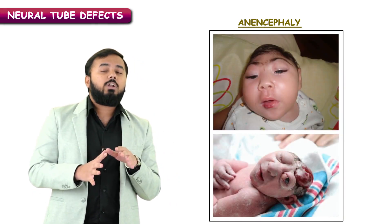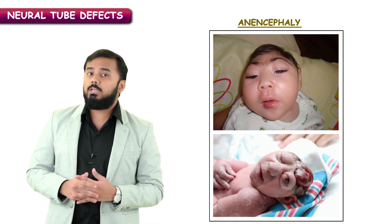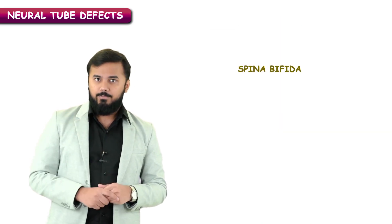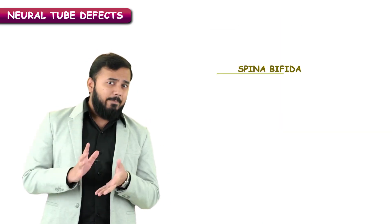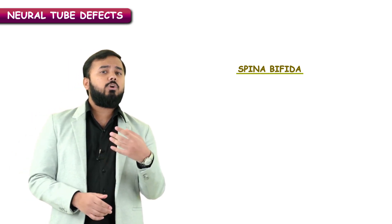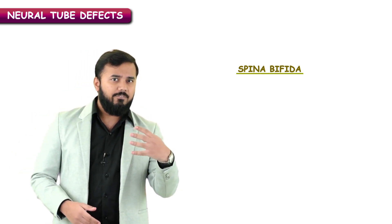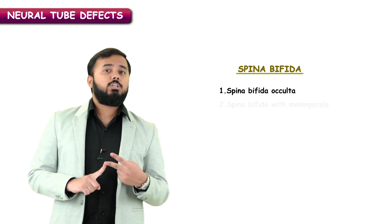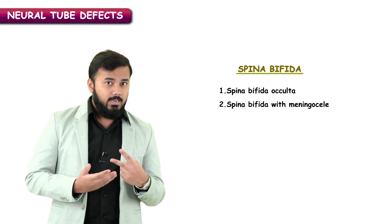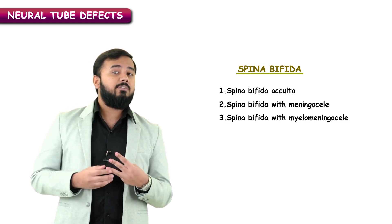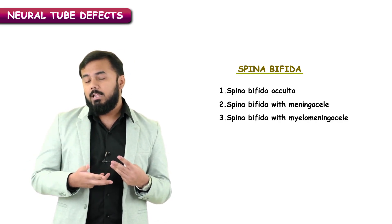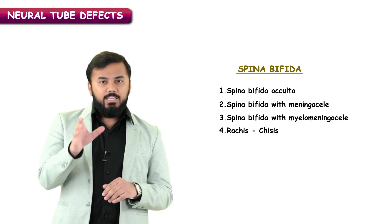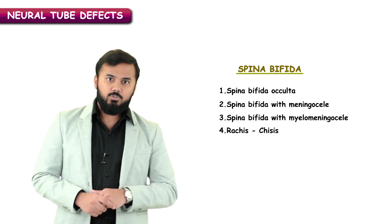When the posterior neuropore does not close by day 28, that leads to a condition called spina bifida. There are four different types of spina bifida you have to know: spina bifida occulta, spina bifida with meningocele, spina bifida with myelomeningocele, and rachischisis. Let us discuss each one of them along with the pictures.